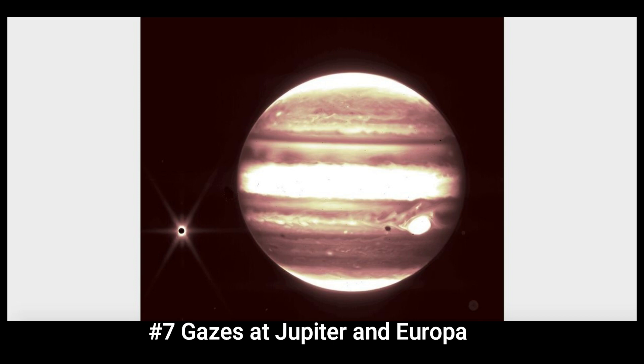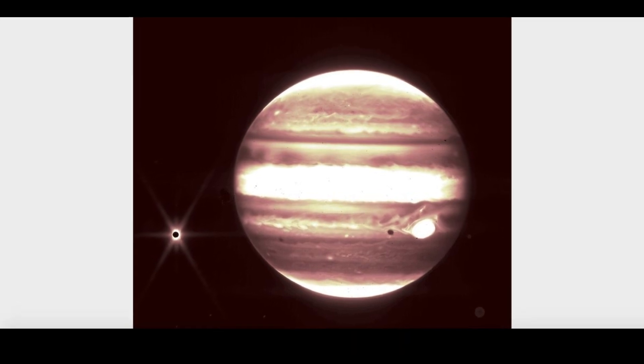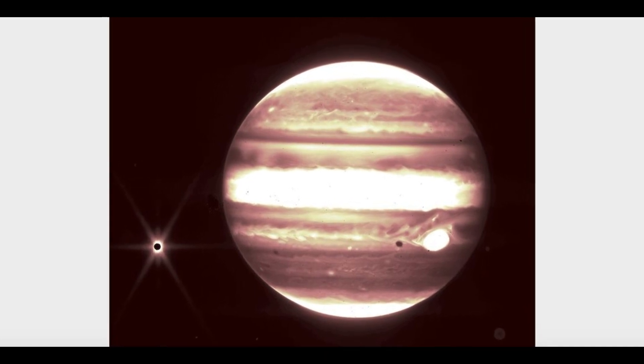Number 7. Gazes at Jupiter and Europa. Another of Webb's early photographs is this one. Along with Europa, one of the gas giant's many moons,